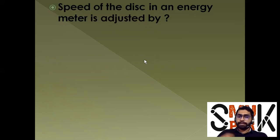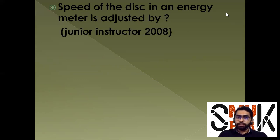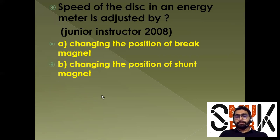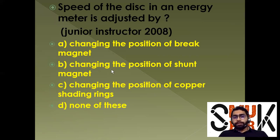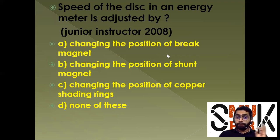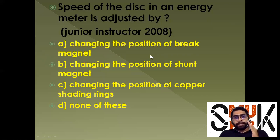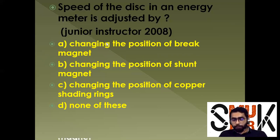The speed of the disc in an energy meter is adjusted by: changing the position of the brake magnet, changing the position of the shunt magnet, or changing the position of copper shading rings. To adjust the speed, we move the brake magnet towards or away from the spindle — that changes the braking force and thus the speed. Option A — changing the position of the brake magnet — is the correct answer.